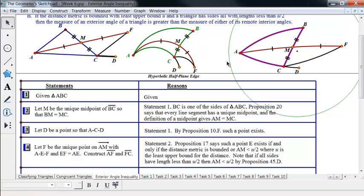Now, how do we know that we can do this? Well, one of our hypotheses says that if the distance metric is bounded, and we know that the distance is less than u over 2, pi over 2, and we know this is true because if all the sides have distance length less than pi over 2, then any Cevian is going to have less than that, and that's Proposition 45D, and that is, let's take a look at that real fast.